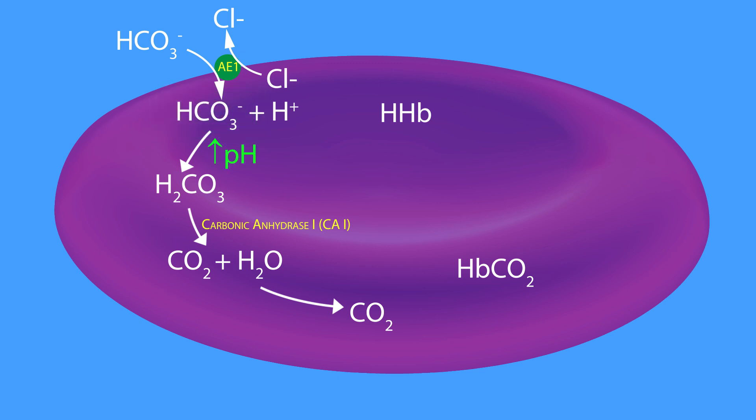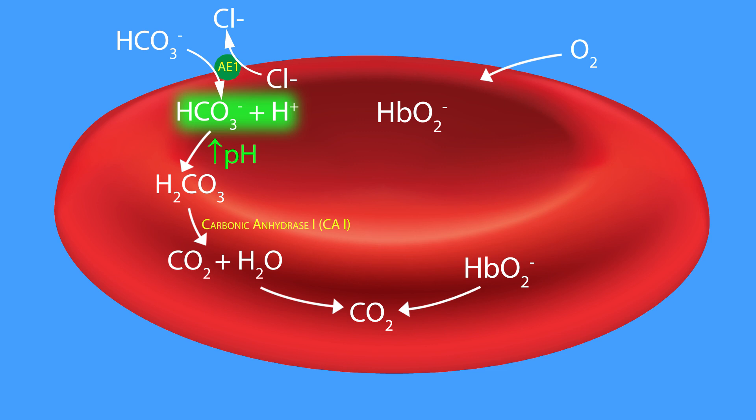Together, the increased intracellular pH and the increased oxygen tension promote the release of hydrogen ions and carbon dioxide from hemoglobin in exchange for oxygen molecules. Now, the free hydrogen and bicarbonate ions spontaneously and rapidly form carbonic acid, which is then rapidly converted back into carbon dioxide and water.